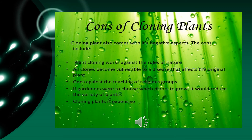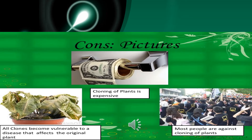The cons of cloning plants are discussed in this slide. Cloning plants also comes with negative aspects. The cons include: plant cloning works against the rules of nature; all clones become vulnerable to a disease that affects the original plant; it goes against the teachings of religious groups; if gardeners were to choose which plants to grow, it would reduce the variety of plants; and cloning plants is expensive. This issue is a very controversial topic with two strong groups for and against it. The world has barely scratched the surface of plant cloning, and scientists are keen on further researching this fascinating development to hopefully discover other beneficial aspects of plant cloning.